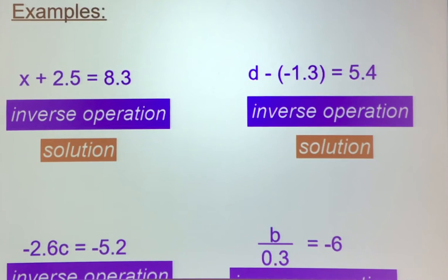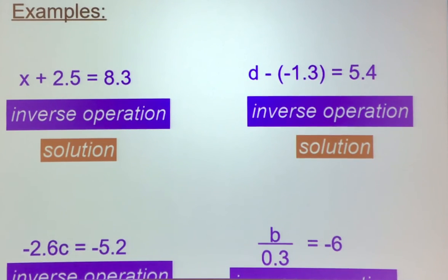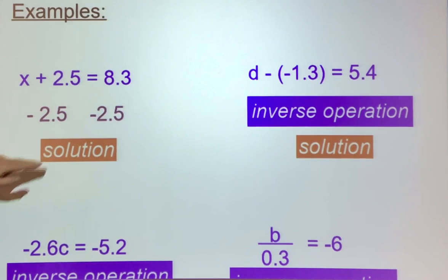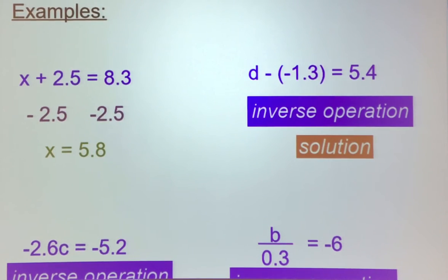Let's start with decimals. The first example: x plus 2.5 is equal to 8.3. The variable is not isolated — they are adding 2.5 to x, so we subtract 2.5 from both sides. The 2.5 and minus 2.5 cancel out, and on the other side, 8.3 minus 2.5 gives us a solution of x equals 5.8.